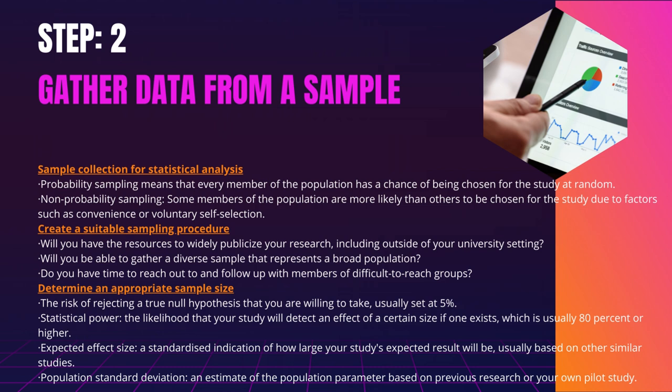Create a suitable sampling procedure. Determine how you will recruit participants based on the resources available for your research. Will you have the resources to widely publicize your research, including outside of your university setting? Will you be able to gather a diverse sample that represents a broad population? Do you have time to reach out to and follow up with members of difficult-to-reach groups? Determine an appropriate sample size. Decide on your sample size before recruiting participants, either by looking at other studies in your field or by using statistics. A sample that is too small may be unrepresentative, whereas a sample that is too large will be more expensive than necessary.